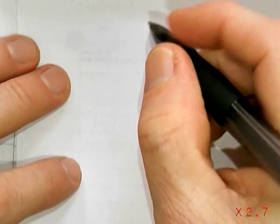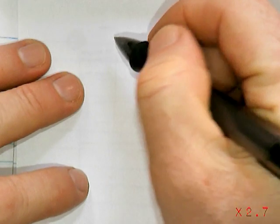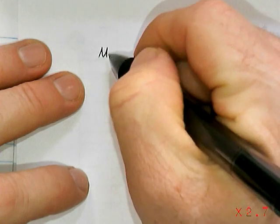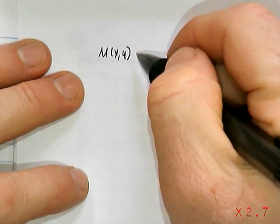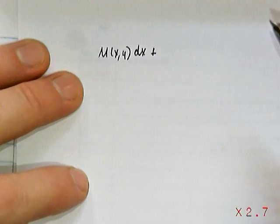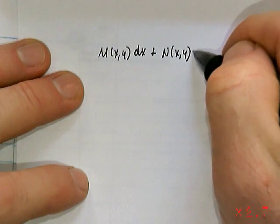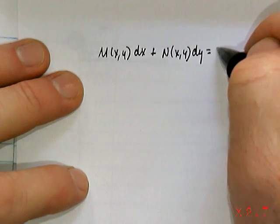Let's review exact equations and recall that if we can take a differential equation of the form M(x,y), some function of x and y, times dx plus N, another function of x and y, times dy, and set that equal to zero.